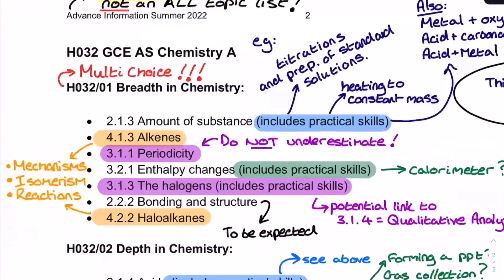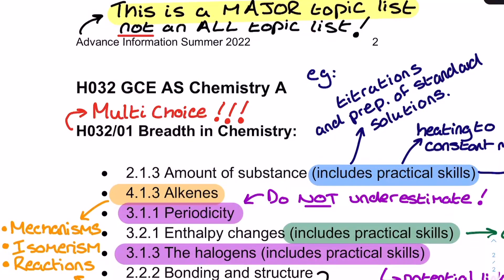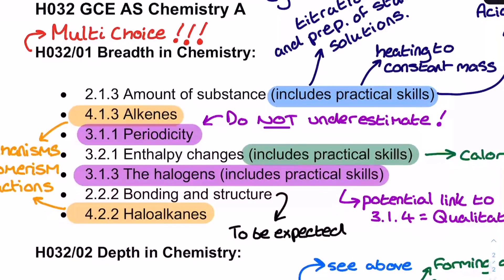First thing I'd like to talk about is how this is a major topic list only. It's not an all topic list. So the content listed here, for example, in the breadth in chemistry paper is not going to be the only content that comes up. And what really makes me nervous here is the fact that you've got multiple choice in the breadth in chemistry paper. You've got quite a lot of them, in fact. Now, let's say, for example, that spectroscopy from module four comes up three times in the multiple choice, three challenging multiple choice questions. Well, that's still only three marks, isn't it? Out of the total 70. So that's not a great deal of presence.